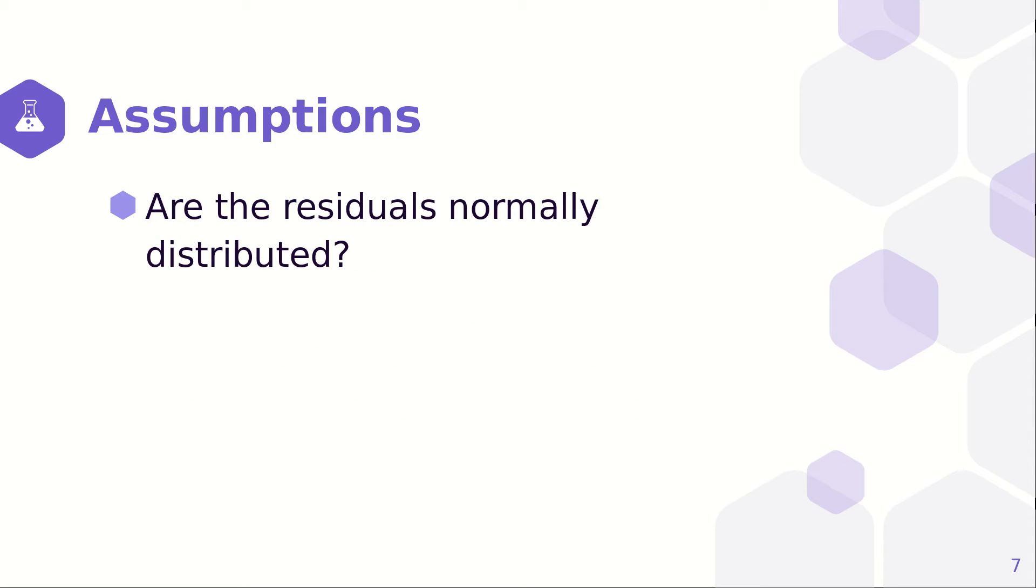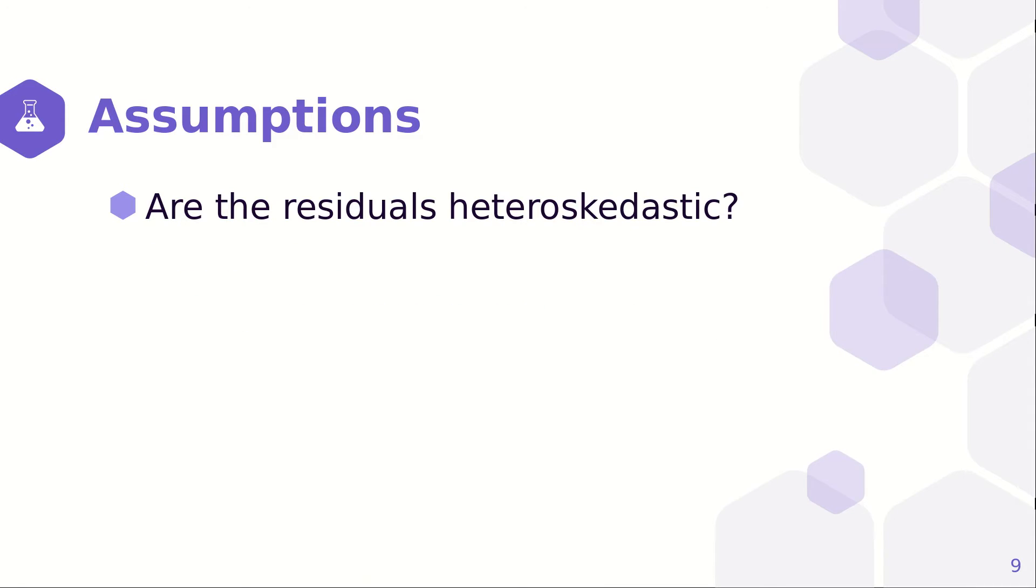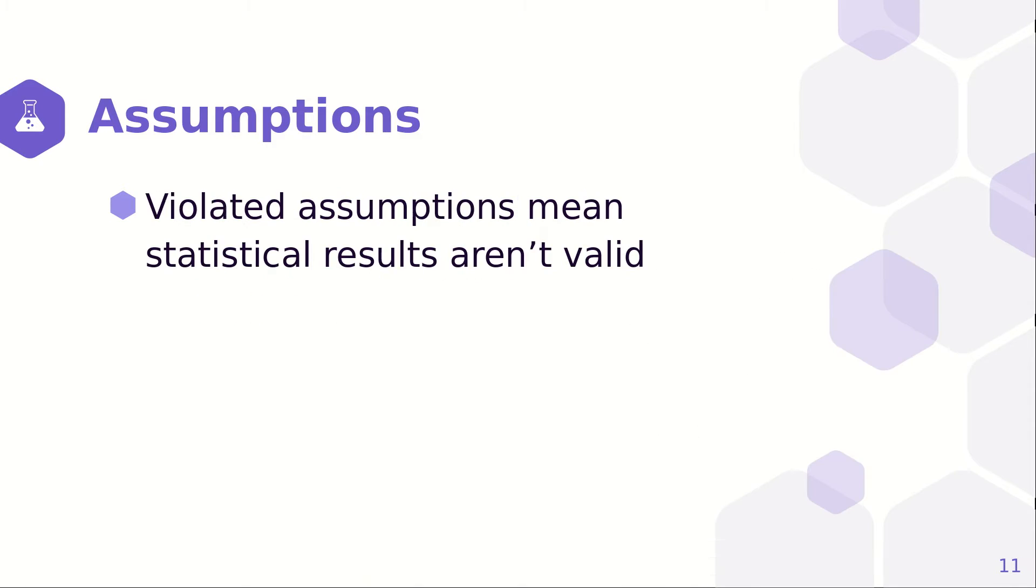So let's look at the distribution of the residuals. Are they normally distributed? No. They're positively skewed and don't fit into a nice bell curve. Are the residuals heteroscedastic? No, they aren't evenly distributed. So, the violated assumptions mean that the results aren't even valid.